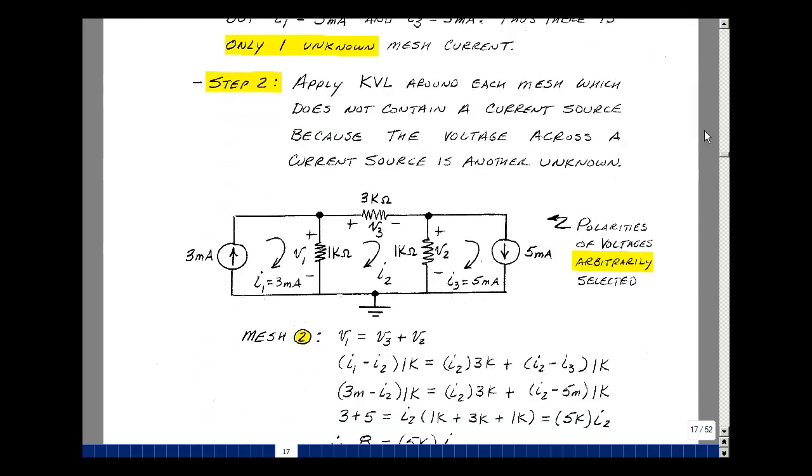Step two of the algorithm is to apply Kirchhoff's voltage law around each mesh which doesn't contain a current source. Now the reason for doing this is that the voltage across the current source is another unknown, just like current coming out of a battery. I don't want to go around this mesh or this mesh, I'm going to go around this mesh.